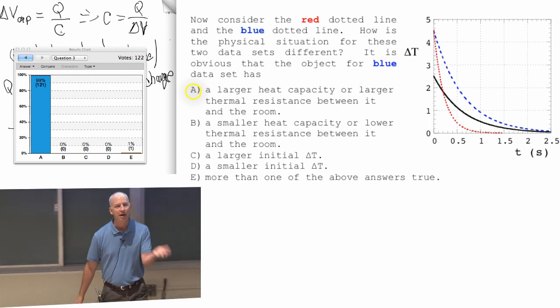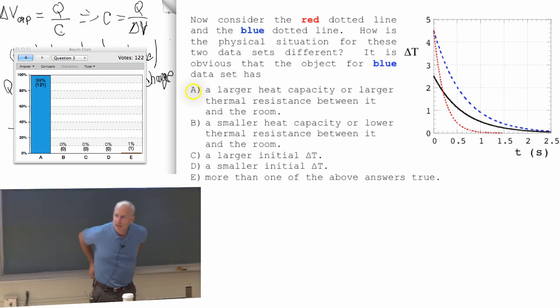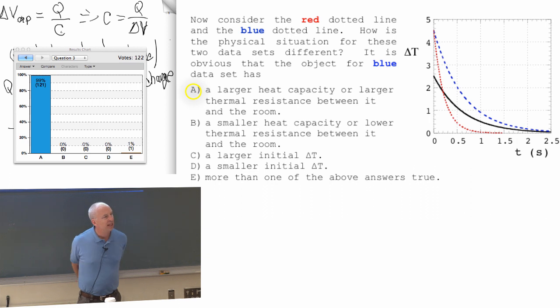Heat capacity tells you how much heat you have to add to change the temperature. If the heat capacity is big, then you need to have a lot of heat to change the temperature.